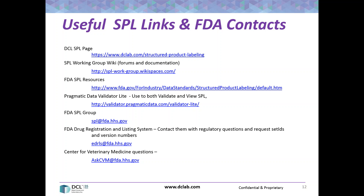The next address is edrls.fda.hhs.gov — that's the FDA Drug Registration and Listing System group. My recommendation is: if you have regulatory questions, a lot of people contact Lonnie Smith directly, and he does answer those. But he's also coordinating with the eDRLS. My recommendation is contact them directly to get a fast response. They're also useful if you want set IDs and version numbers — as long as you're authorized to get that information, they will give it to you.